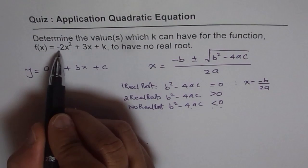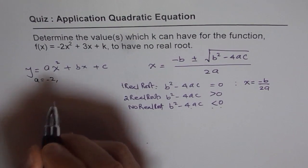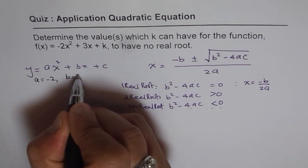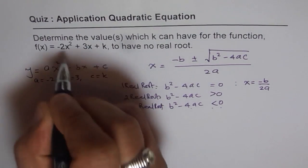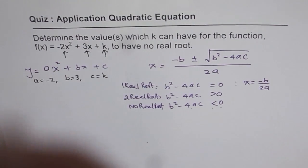In the given equation, what is a? We have a = -2, b = 3, and c = k. These are your coefficients and constants.